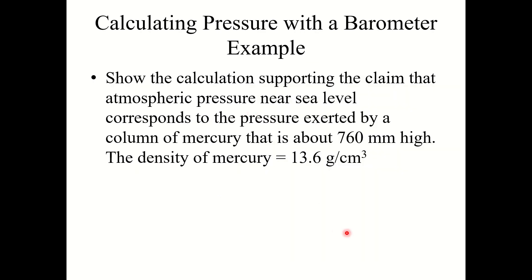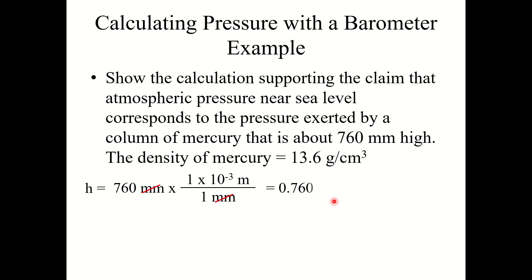Let's look at a quick example problem. The problem states: show the calculation supporting the claim that atmospheric pressure near sea level corresponds to the pressure exerted by a column of mercury about 760 millimeters high. The density of mercury is 13.6 grams per centimeter cubed. First, convert the height from millimeters to meters: 760 millimeters converts to 0.760 meters.